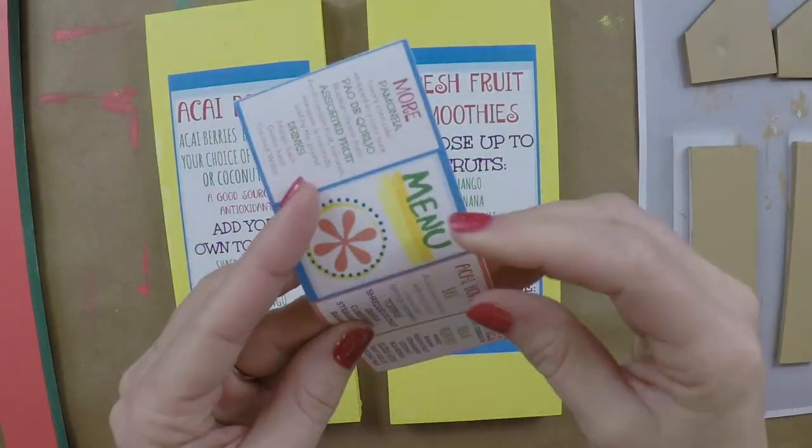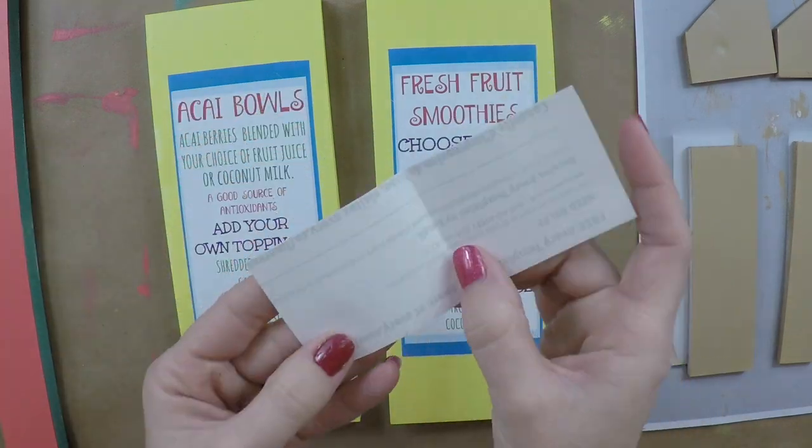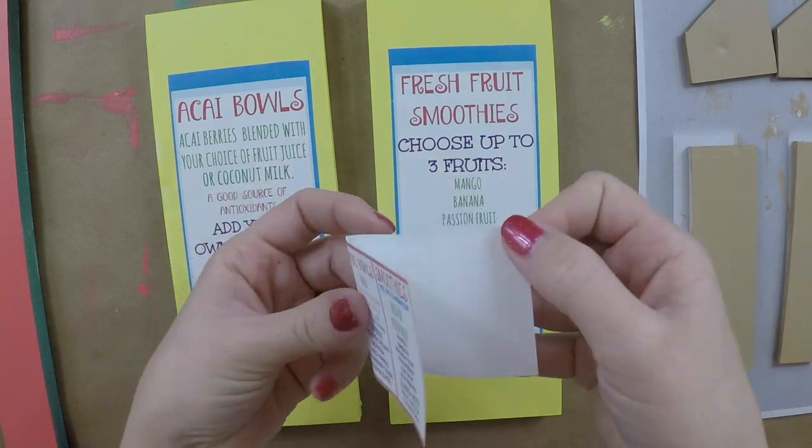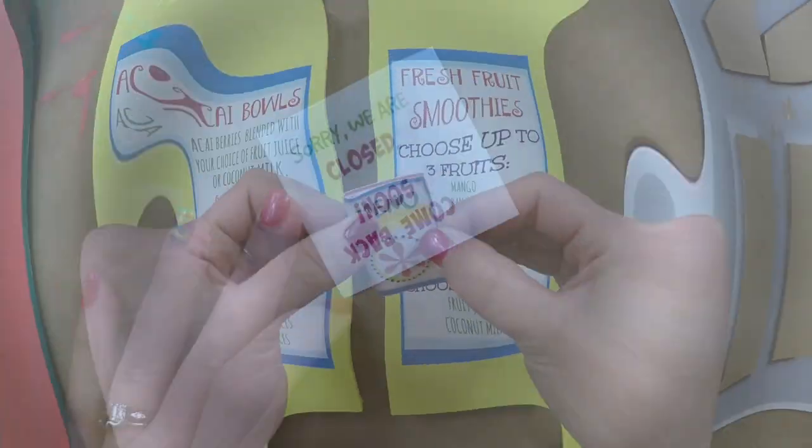Since the menu was printed on sticker paper too, I'm going to fold it in half, remove the backing of the sticker paper, and then just fold it on so it sticks together, and fold it again. Now you have your menu.